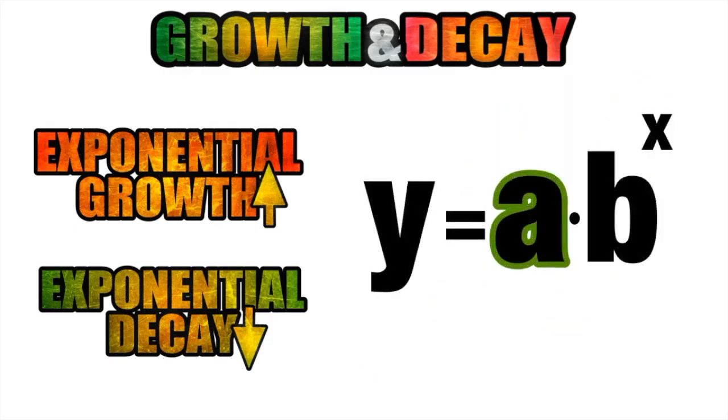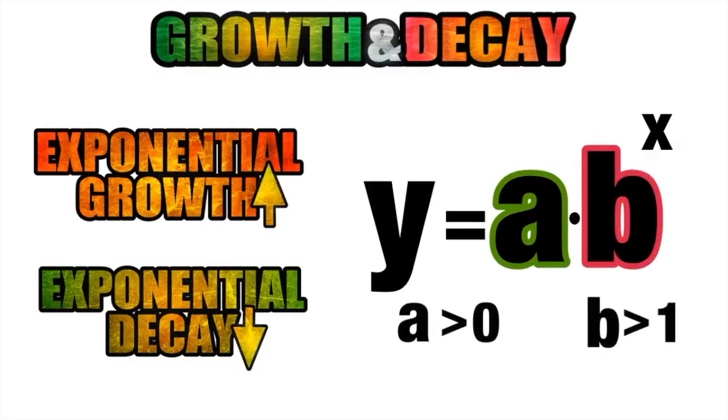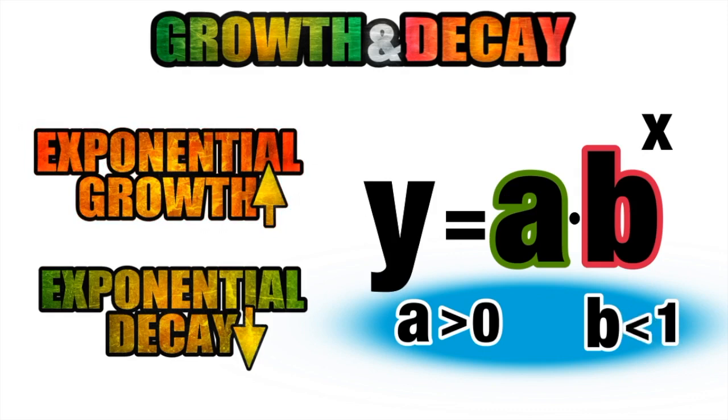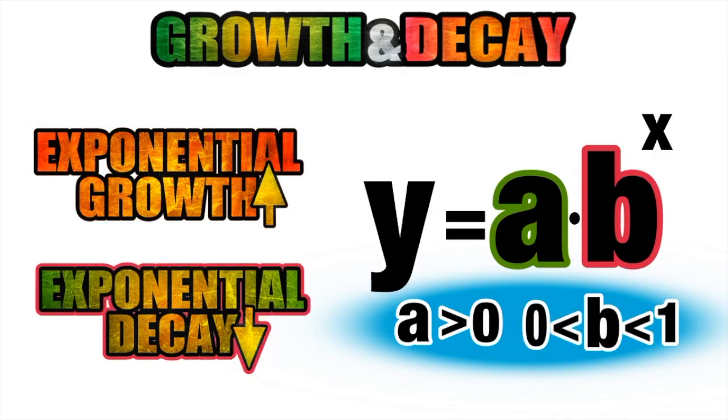Note that in such equations, the a value always has to be greater than zero. Now if the value of b is greater than one, the function will represent growth. However, if the value of b is less than one but greater than zero, if it's in between, then the function will represent decay.